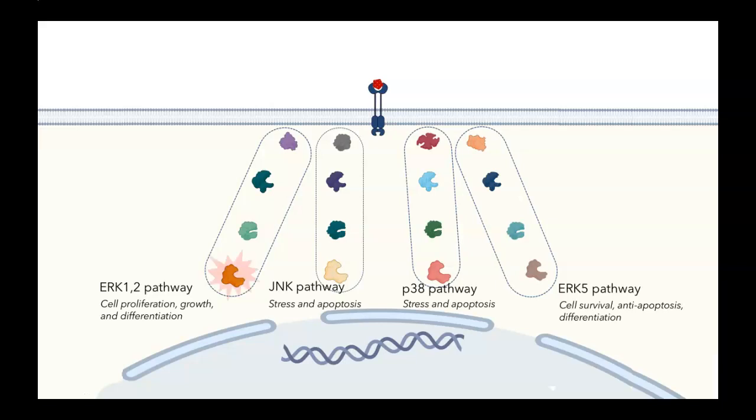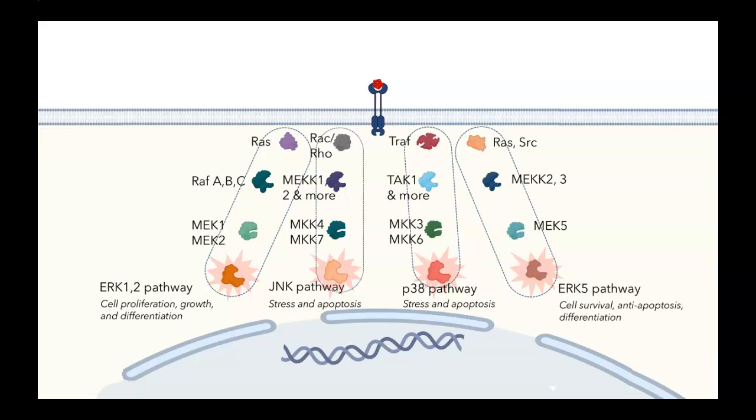You can see that there are different MAP kinases in the four different pathways. For example, in the ERK-1-2 pathway, the MAP kinase family member is ERK-1 or ERK-2. It's not just the MAP kinase family member that's different in these different pathways. There are also different MAP kinase kinase family members, different MAP kinase kinase kinase members, and different membrane-associated events and different receptors that can be activating these pathways.